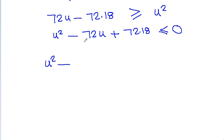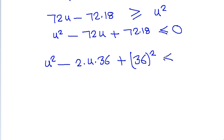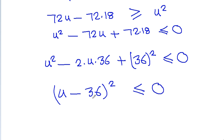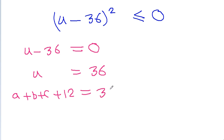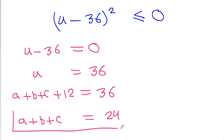Simplifying further, u² − 72u + 36² ≤ 0, which gives (u−36)² ≤ 0. Since (u−36)² cannot be negative, we must have u−36 = 0, so u = 36. Since u = a+b+c+12 = 36, we get a+b+c = 24.